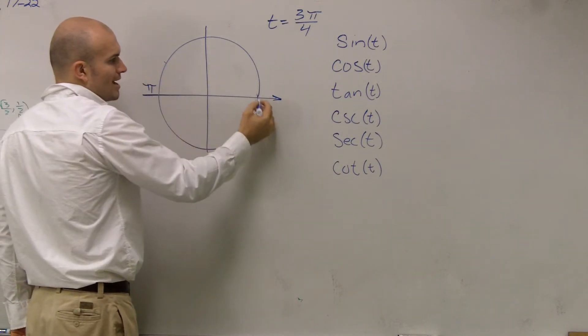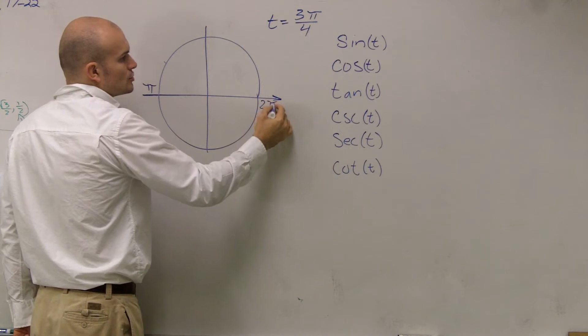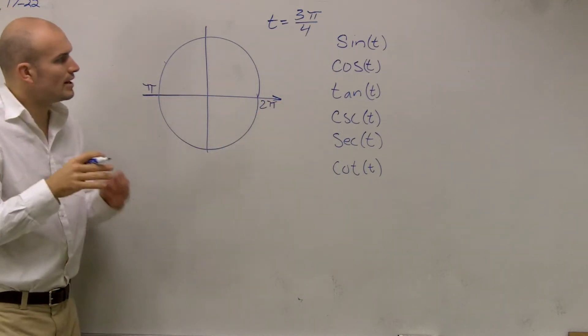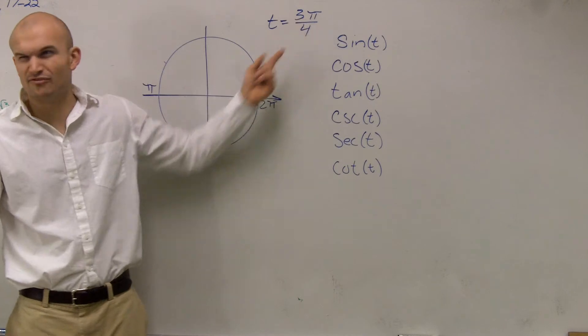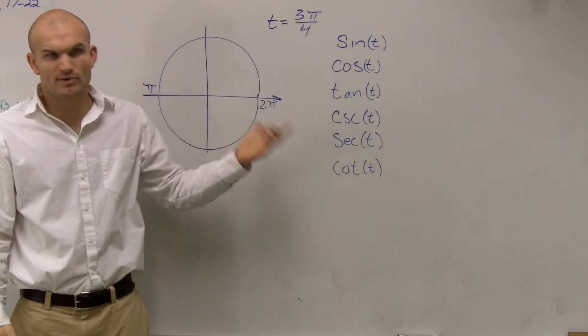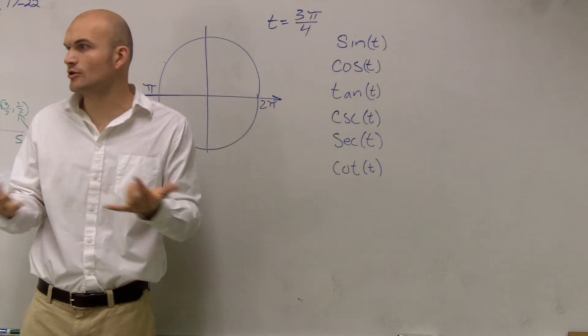And going all the way around will give us 2π, right? So what I want to do though, is they have it as a fraction. So they're saying like 3 fourths of π. Well, where exactly is that?